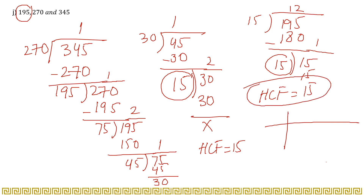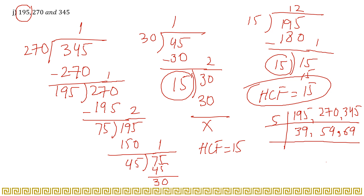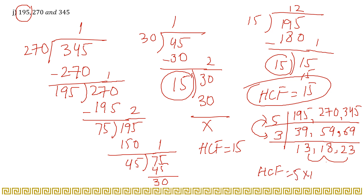Now prime factorization for 195, 270, and 345. Starting with 5 (which divides all three), then 3. After dividing by 5 and 3, the resulting numbers are different and share no common factor. So the HCF is 5 × 3 = 15, confirming our division method answer.